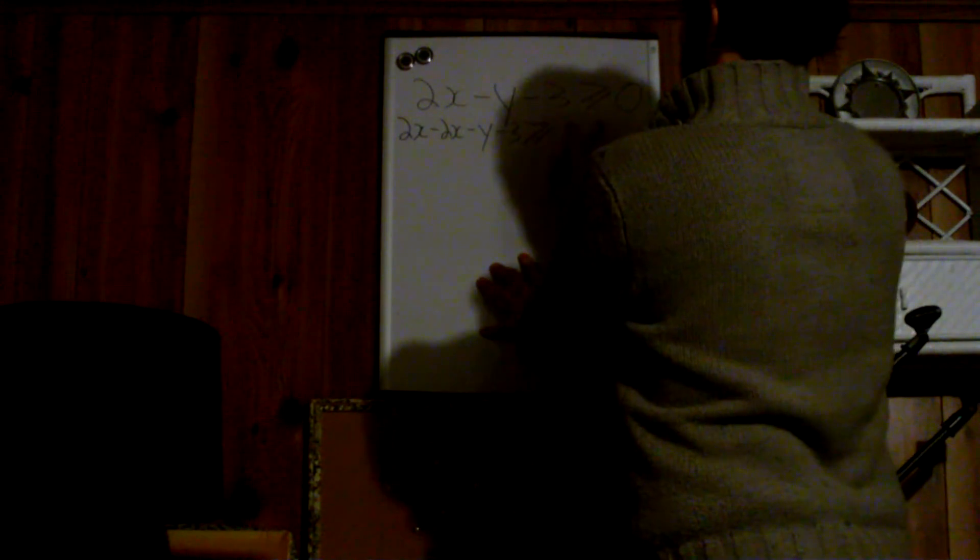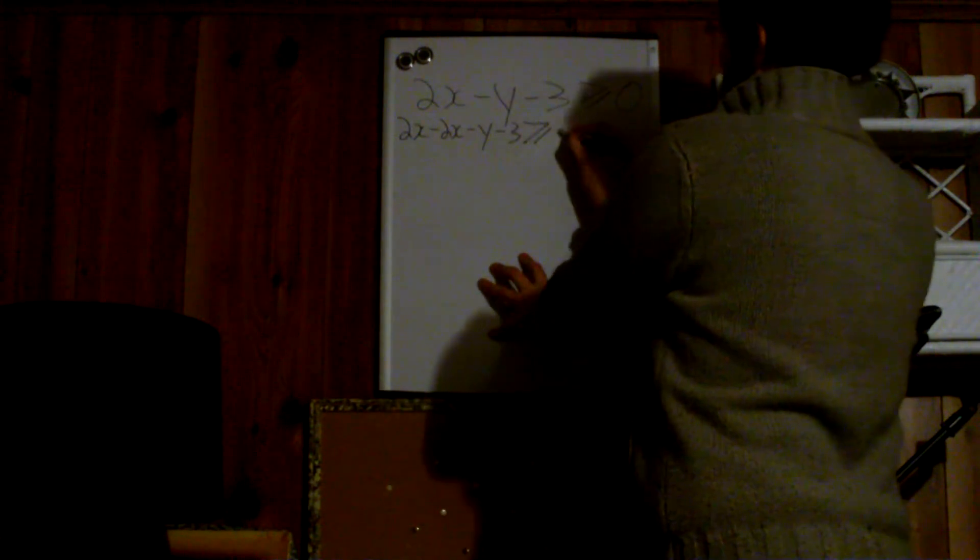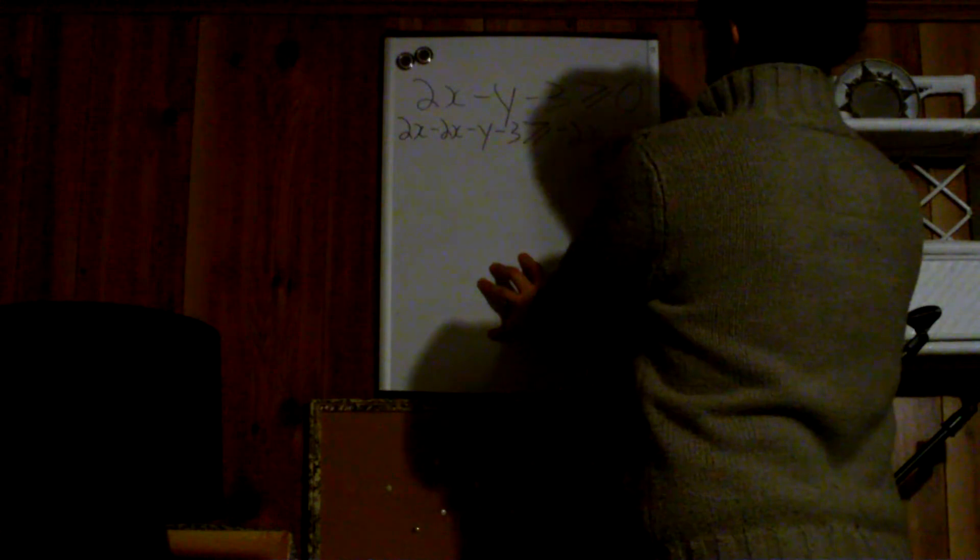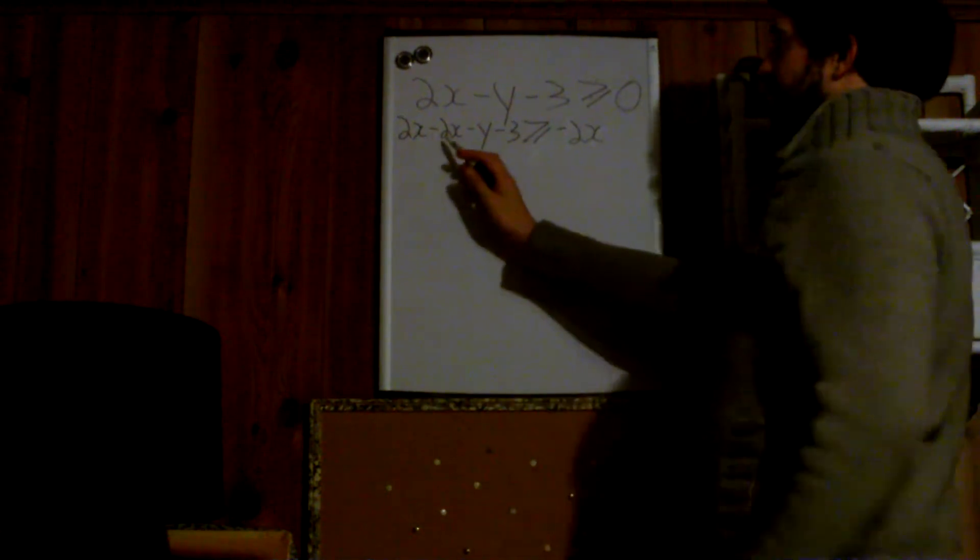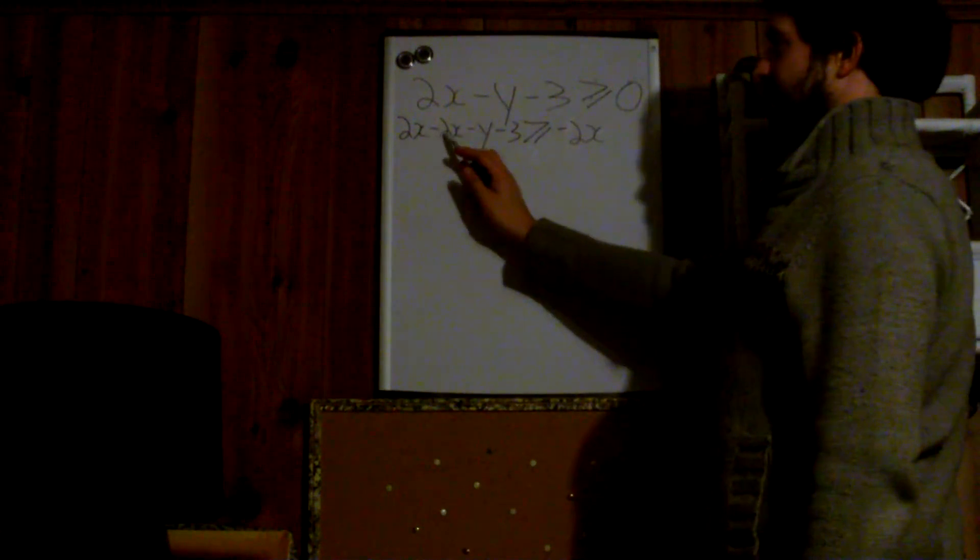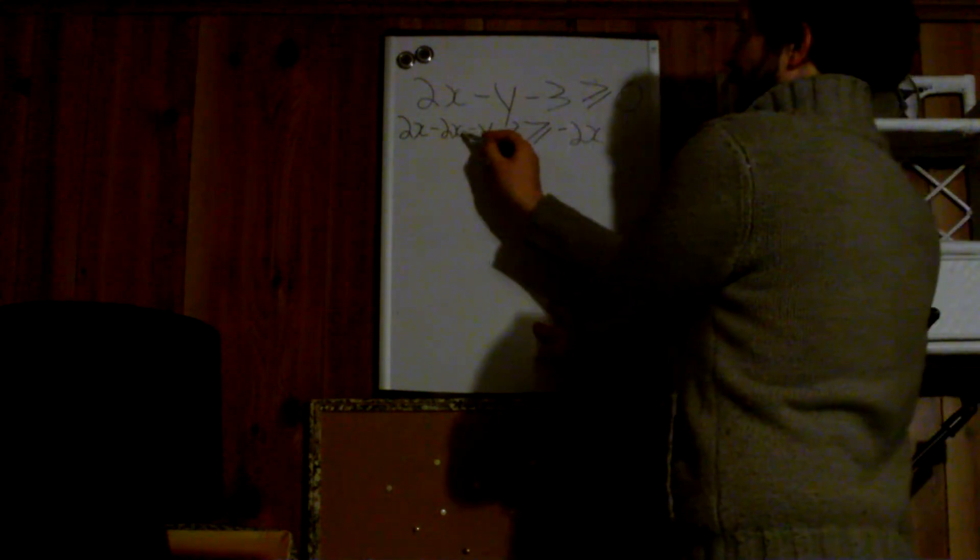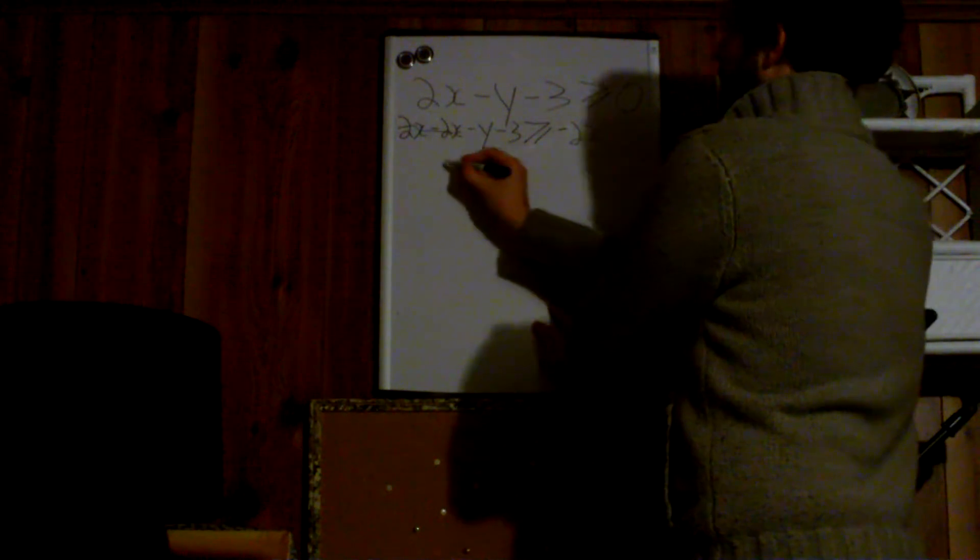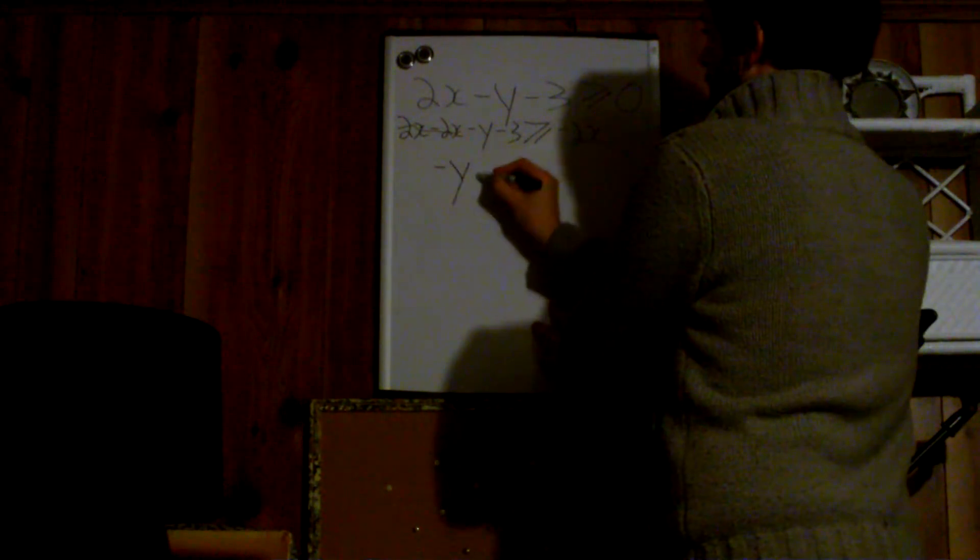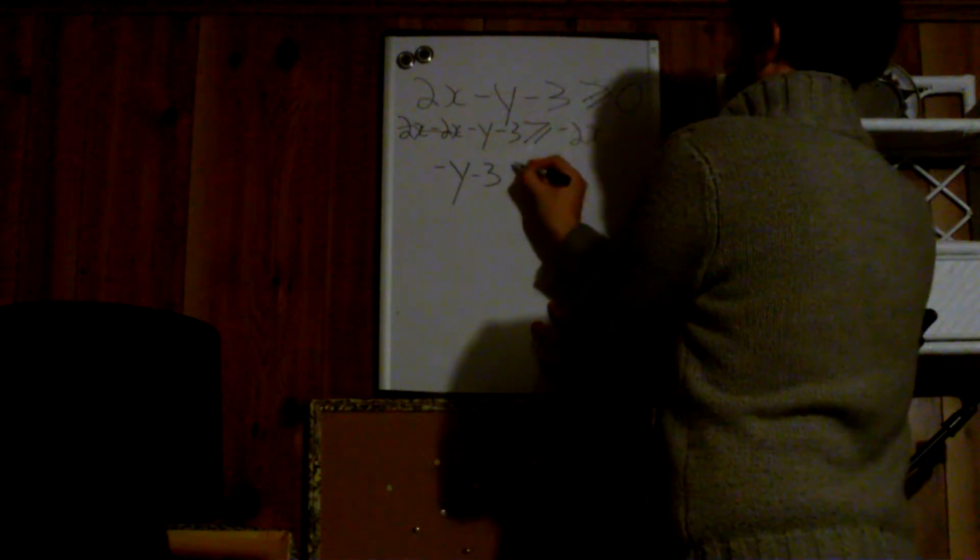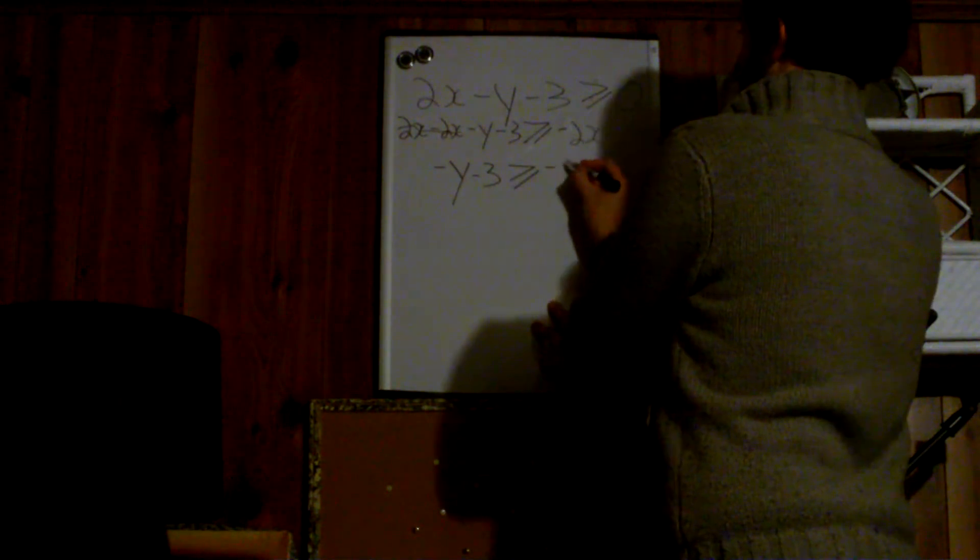Oops, so we don't need the zero anymore. The only thing I did, I subtracted 2x on this side because I wanted to get rid of it. I have to do it on this side, I have to do it on the other side of the sign. So these guys cancel each other. We're left with negative y subtract 3 is greater than or equal to negative 2x.